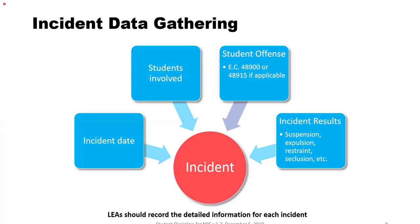When gathering data for an incident, you want to make sure you can provide the LEA with all the elements they need to report it to CALPADS. That includes the incident date, the students involved, the student offense — which can be found in the code set in the document we'll provide — and then the incident result: what happened, what was the result, and who determined the result, which is the authority.